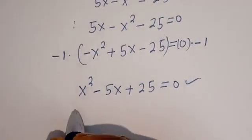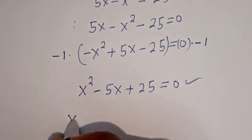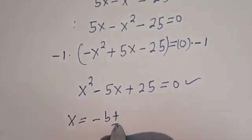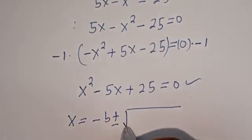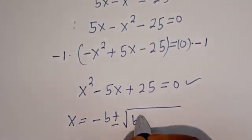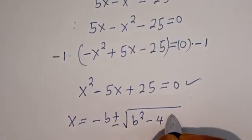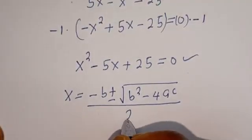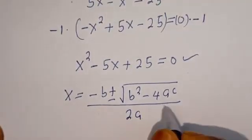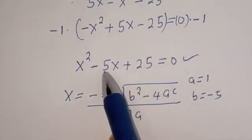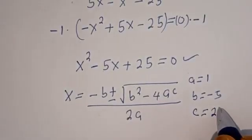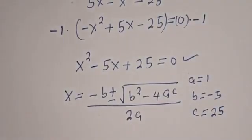Our quadratic general formula is given as x equals minus b plus or minus square root of b squared minus 4ac, divided by 2a. Here a is equal to 1, b is equal to minus 5, and c is equal to 25. Let's substitute.